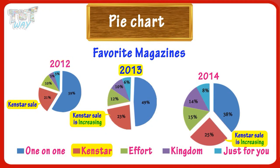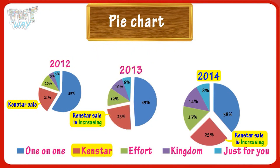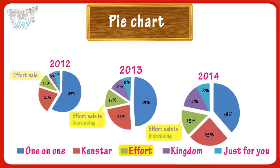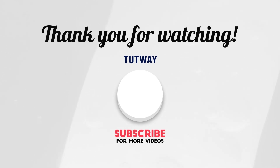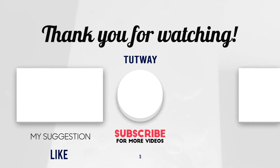Subscribers of Kenstar are increasing: 21 percent in 2012, 23 percent in 2013, and 25 percent in 2014. More trends can be seen easily — subscribers of Effort are also increasing: 10 percent in 2012, 12 percent in 2013, and 15 percent in 2014. Thank you so much for watching, don't forget to like, comment, and share this video.